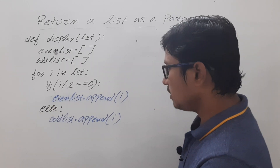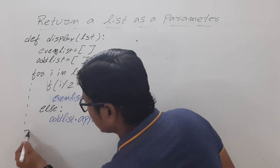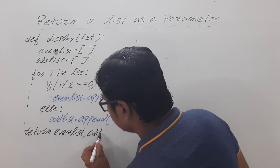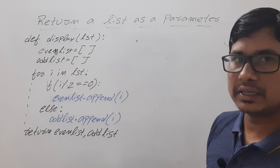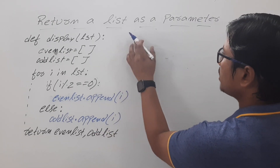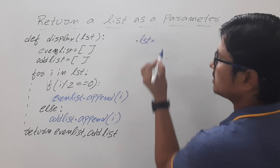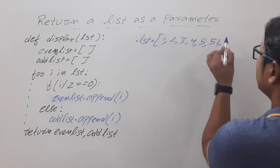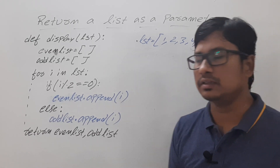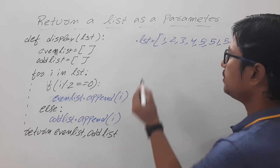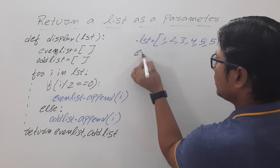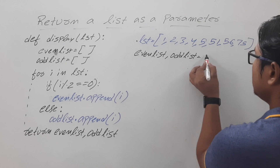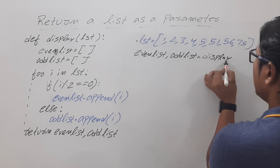Once all the elements are appended to either the even list or odd list, I will return both the lists: return even list comma odd list. Now I am writing the main section. I will take a list of elements - LST consists of elements like 1, 2, 3, 4, 5, 56, 51, 56, 75. Then I will call the display function, and I assign the result as: even list comma odd list equals display, passing this list as a parameter.